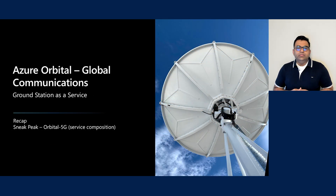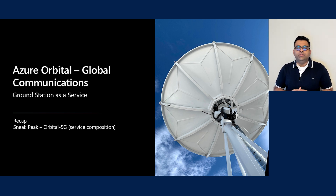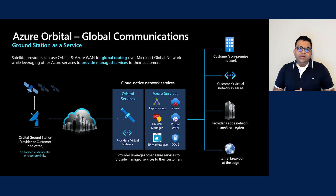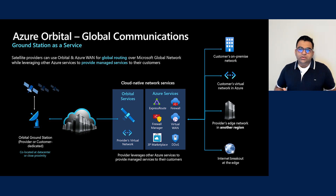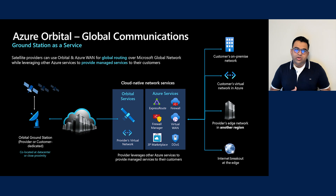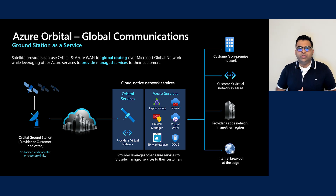Now let's shift gears and move to Azure Orbital global communications. Let's quickly recap and give you a sneak peek of Orbital 5G. By interconnecting their existing ground stations or by co-locating ground stations in our data centers, satellite providers can use our global backbone for delivering traffic to multiple locations — to customers on-premise network, to customers in Azure in the same or another region, or back to their network in another region, or leverage our ISP peerings to exit out to the internet. In the process, they can combine various Azure services with Azure Orbital. Let's now take a look at how providers can take advantage of this with Orbital 5G.